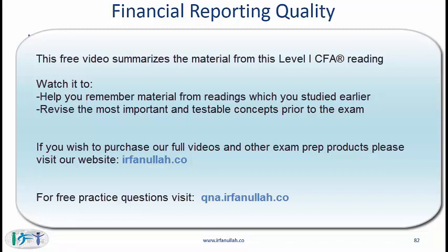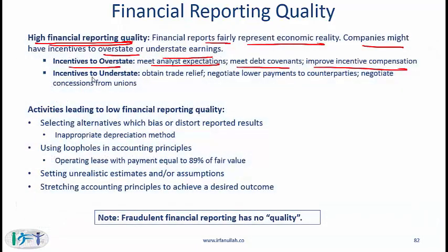Companies might have incentives to overstate or understate earnings. Incentives to overstate include: meeting analyst expectations, meeting debt covenants, or improving incentive compensation. Incentives to understate include: obtaining trade relief, negotiating lower payments to counterparties, or negotiating concessions from unions.